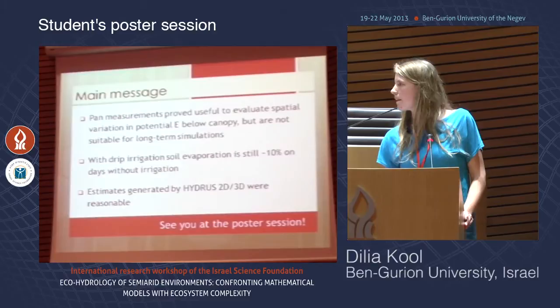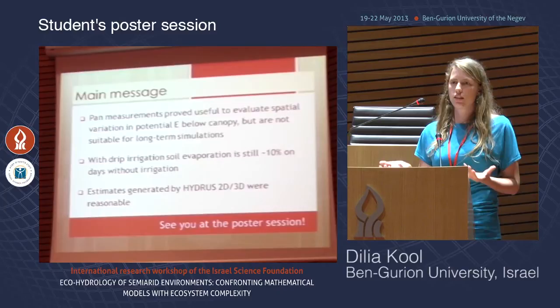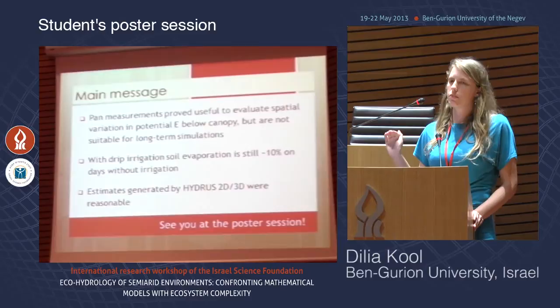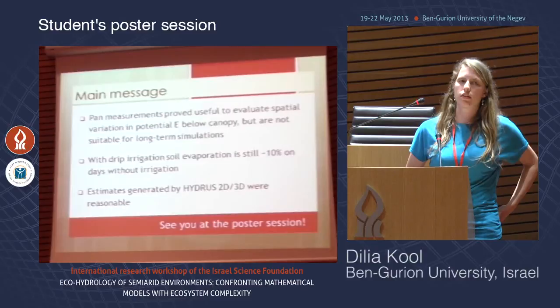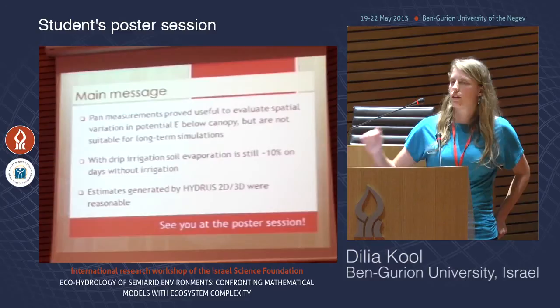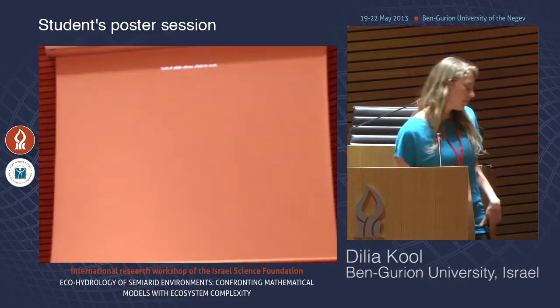Our main message is that with micro-pans we can see variation below the vines. We see that with drip irrigation, normally presumed to be very efficient, we still have about 10% evaporation of evapotranspiration on days without irrigation. With Hydrus 2D, we are not yet able to get the diurnal patterns, but we do get reasonable magnitudes.